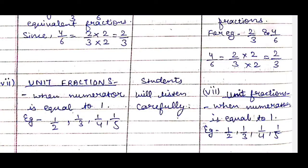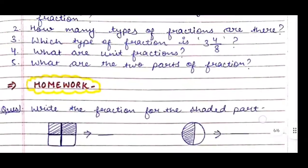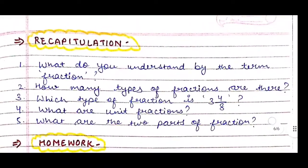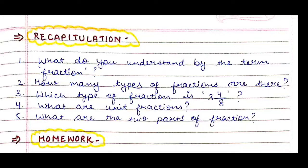The last type of fraction is unit fractions — when the numerator is equal to one. As the name suggests, it is related to one. Examples: 1/2, 1/3, 1/4, 1/5, 1/7 — whenever the numerator is one, it is a unit fraction. We write this on the board as well. This completes the teaching part.